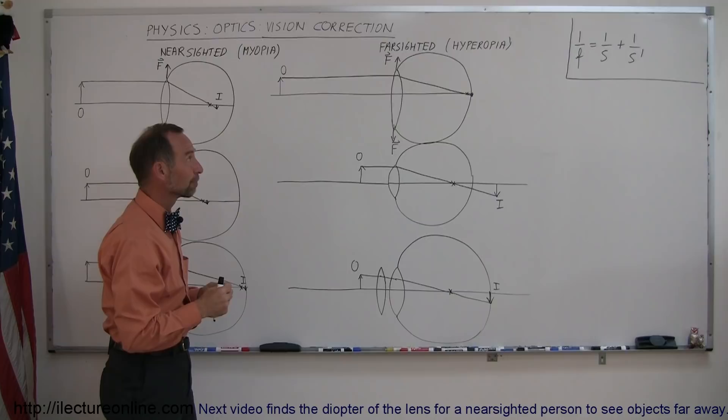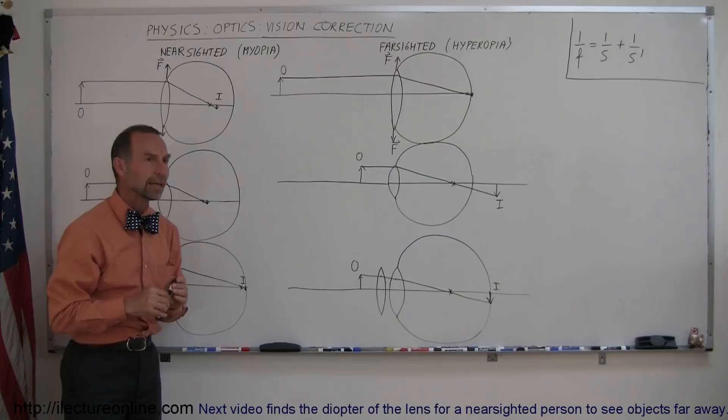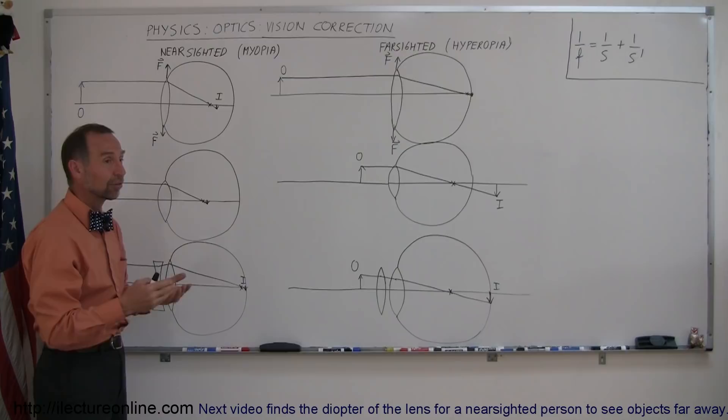So how does that work? Why is it that we have these different conditions? Well I would say that nearsightedness is probably experienced by about half the population, so half the population approximately needs eyeglasses, contact lenses or eyeglasses, and this is why they need that.